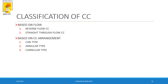The classification of combustion chambers based on flow includes reversed flow combustion chambers and straight-through flow combustion chambers, with straight-through flow being the most predominantly used. Based on arrangement, combustion chambers are classified as can type, annular type, and cannular type.